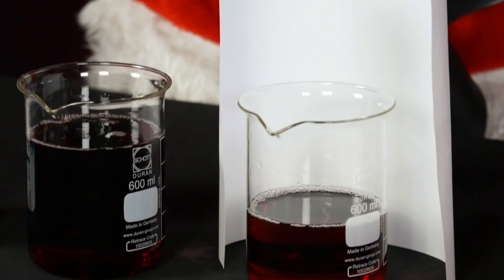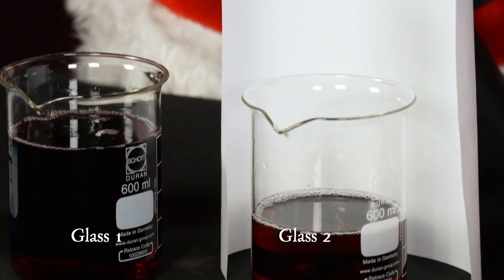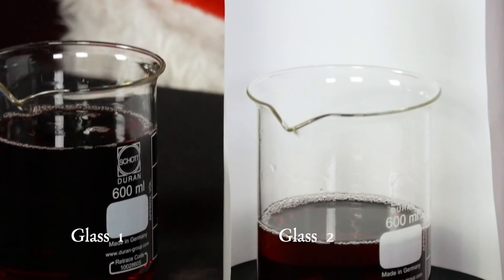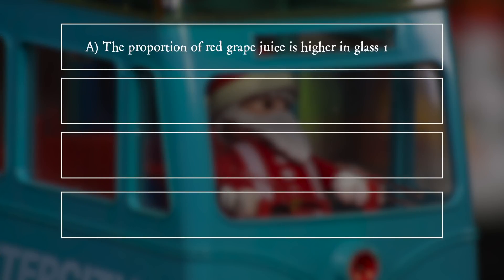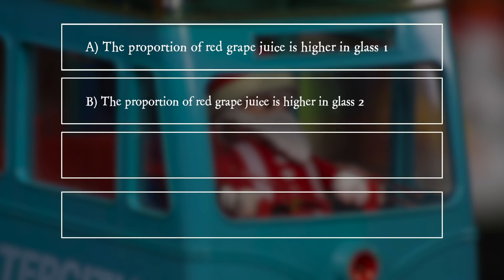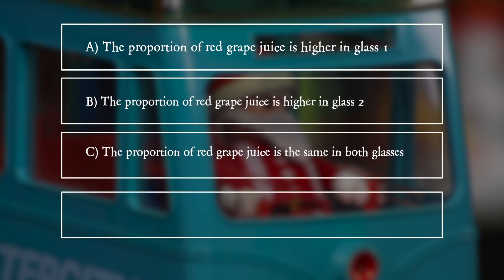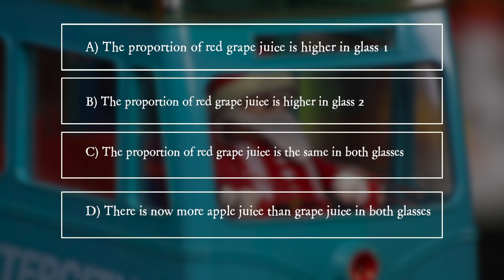In which glass is the proportion of red grape juice higher? A. The proportion of red grape juice is higher in glass one. B. The proportion of red grape juice is higher in glass two. C. The proportion of red grape juice is the same in both glasses. D. There is now more apple juice than grape juice in both glasses.